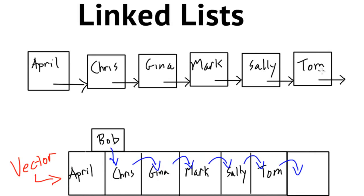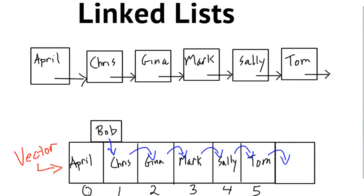Now we have our linked list structure constructed — a logical representation of it — and you can see that each node is linked to the node following it: April linked to Chris, Chris to Gina, Gina to Mark, Mark to Sally, and Sally to Tom. The way we get from one node to another is via these links. We don't have index values like with the vector — these nodes could be very far apart in memory. April could be 1,000 address spaces away from Chris, and Chris could be 10,000 address spaces away from Gina. The way we get from one node to another is via these links, which in actual implementation are pointers holding the address of wherever the next node is.